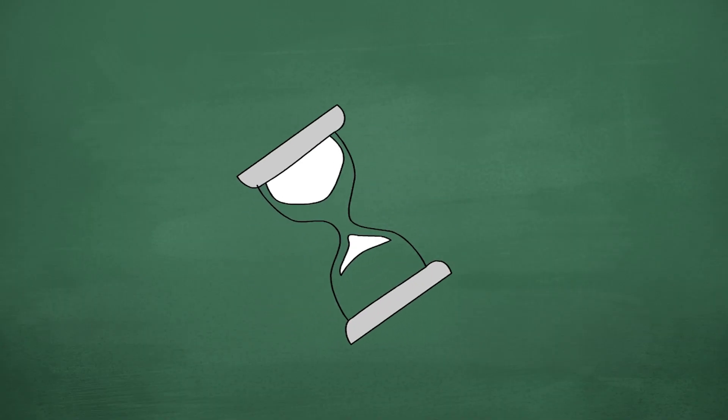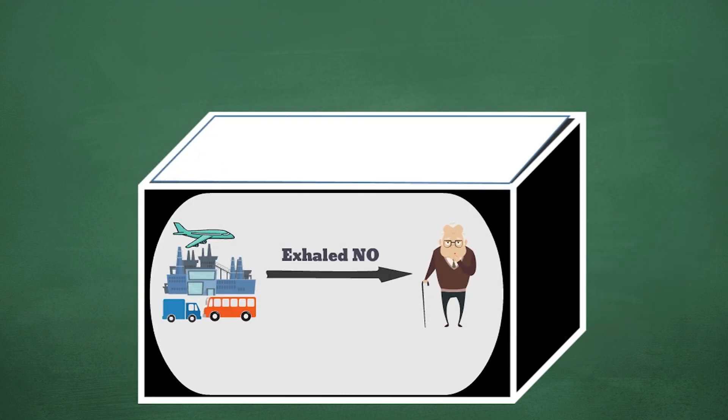It takes time to develop asthma. Tracking exhaled NO helps us open the black box and see how air pollution exposure causes asthma. That could give us an early warning sign that something is wrong, way before the disease.